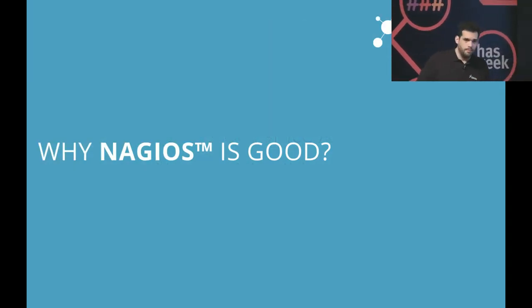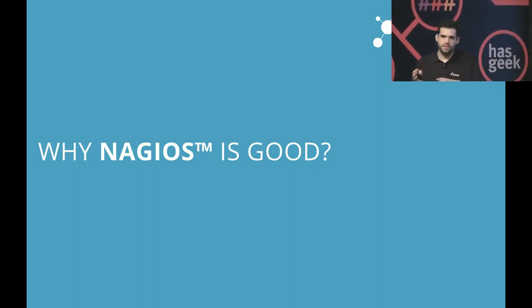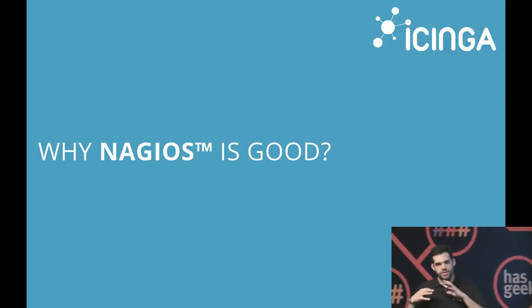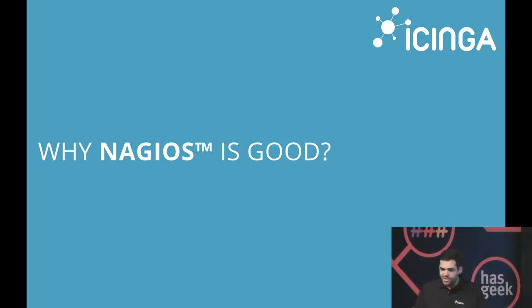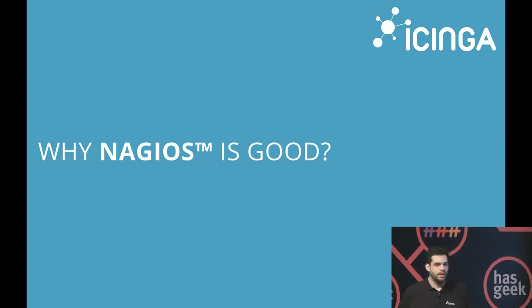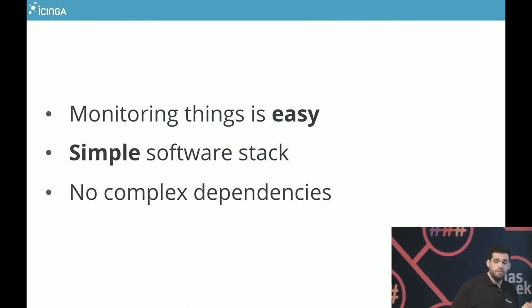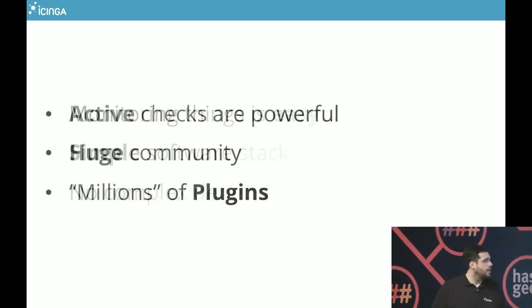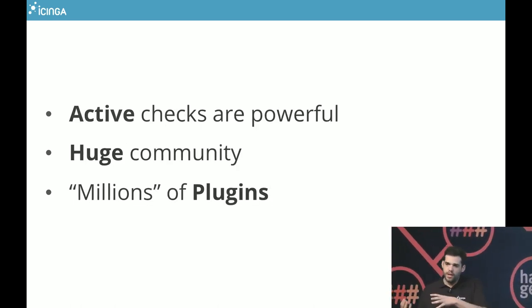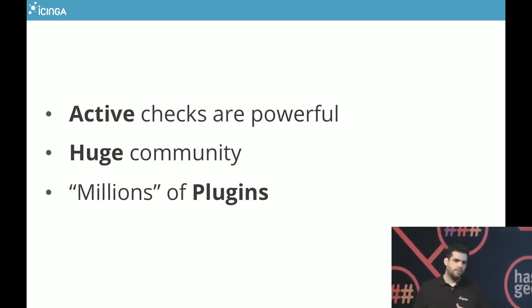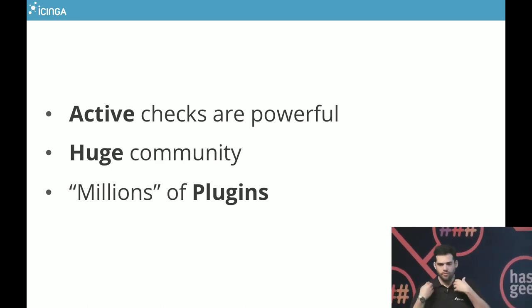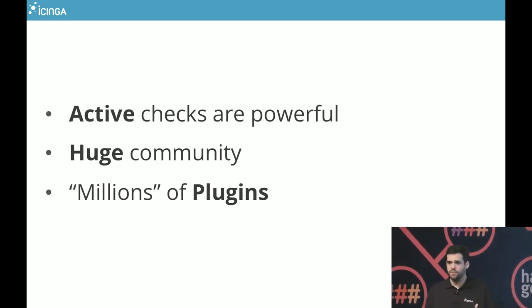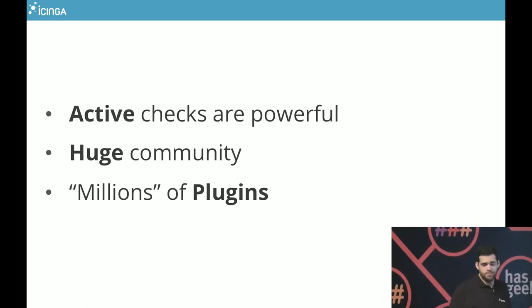So why is Nagios good? The history is that all the Icinga people were huge Nagios fans. We saw that Nagios has big advantages — the basic concept is great. It's very easy to monitor things with Nagios, which is a major reason it's so popular: you can write an easy plugin, it's a simple software stack, no complex queues or many dependencies, very easy to get a first monitoring result. We like the concept of active checks. The most power comes from actively going to a system every minute or every second. And we have — not millions, but a lot of — plugins.